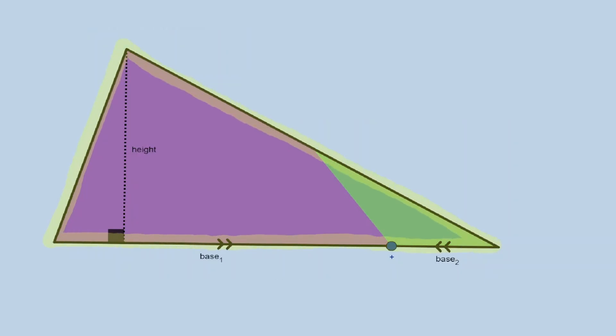So the same formula that we have for the area of the triangle can be used to find the area of a trapezoid, where the base of this triangle is the addition of the two bases in our trapezoid.